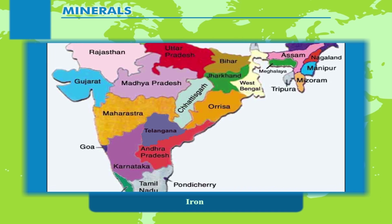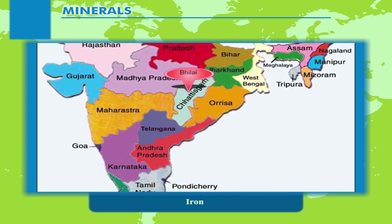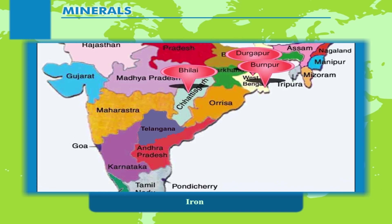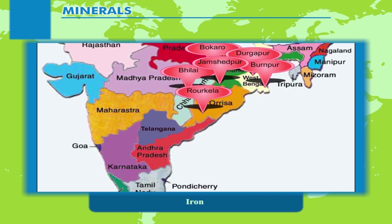In 1907, Jamshetji Tata set up a modern steel plant at Jamshedpur in Jharkhand. Important steel producing centres — Bhilai, Durgapur, Burnpur, Jamshedpur, Rourkela, and Bokaro — are situated in a region that spreads over four states: West Bengal, Jharkhand, Odisha, and Chhattisgarh.